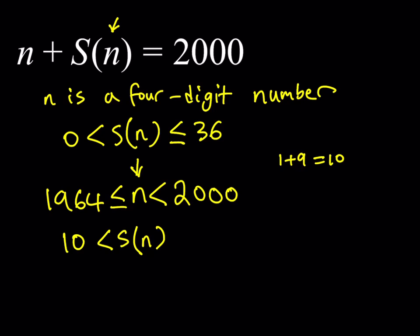What about the maximum value? Well, if you think about all 9s and 1s, so 1999, in other words, you're going to be getting basically 28. So this sum needs to be less than or equal to 28, because n needs to be less than 2000. So the highest it can be is 1999, and that sum is 28.